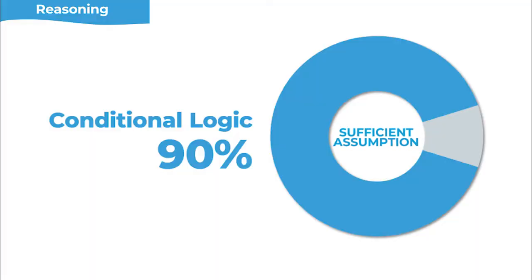The reasoning structure we really need to pay attention to on sufficient assumption questions is conditional logic. 90% of sufficient assumption questions are driven by these if-then relationships. The reason they tend to use conditional logic is because we are trying to guarantee the conclusion follows. Because conditional logic is so mathematical, it lends itself nicely to these provable equations: if A then B, if B then C, therefore if A then C. We need to get comfortable with conditional logic because it's a massive part of sufficient assumption questions.